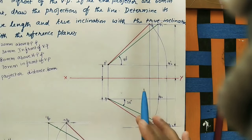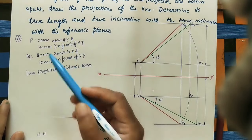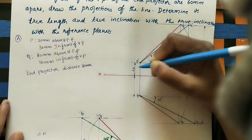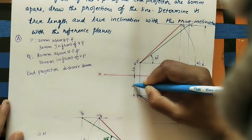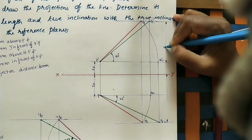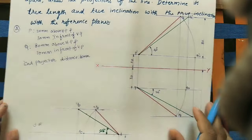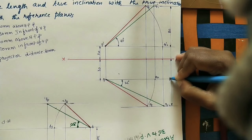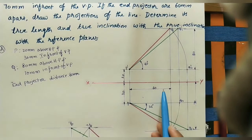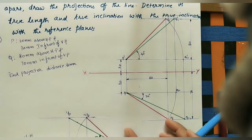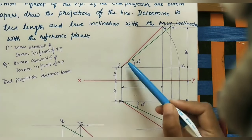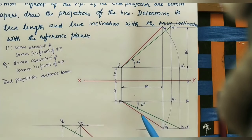Also mark the given dimensions on the diagram. Point P is 20 mm above HP — mark the dimension line with value 20. It is 30 mm in front of VP — mark 30. Q is 80 mm above HP — mark 80. Q is 70 mm in front of VP — mark 70. The distance between the end projectors is 60 mm — mark 60 inside or outside the diagram. This completes the process of finding the true length of the line as well as its true inclinations with HP and VP.